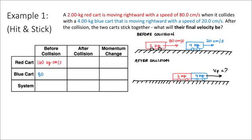So that'll be 80, 4 times 20, kilogram times centimeter per second. The system here will just be the two carts added together. So 160 plus 80 would be 240 units of momentum together. So total, the system has 240 positive units of momentum before the collision.